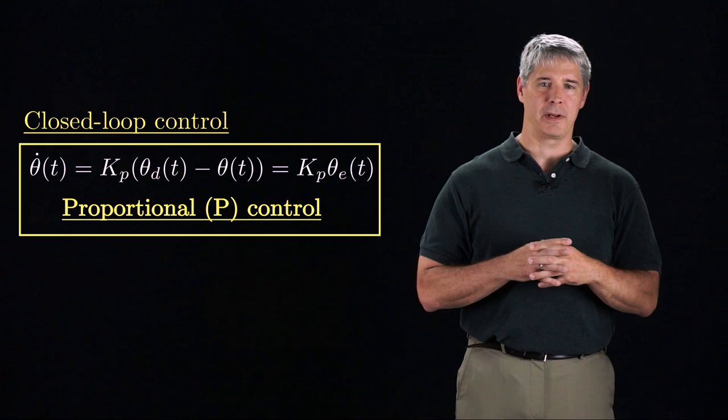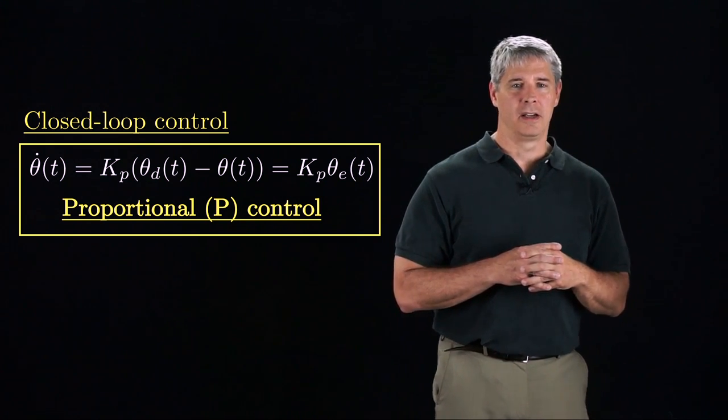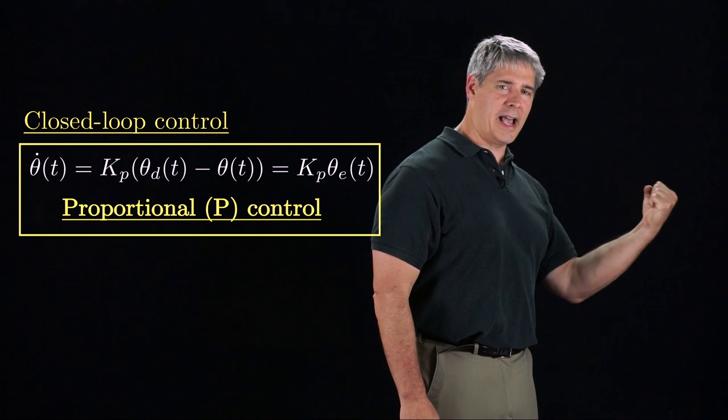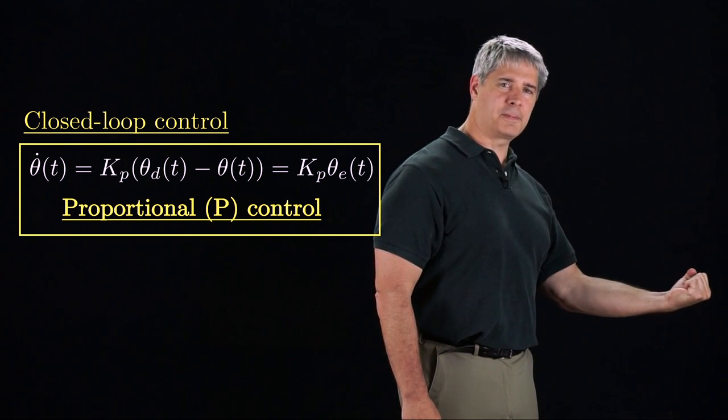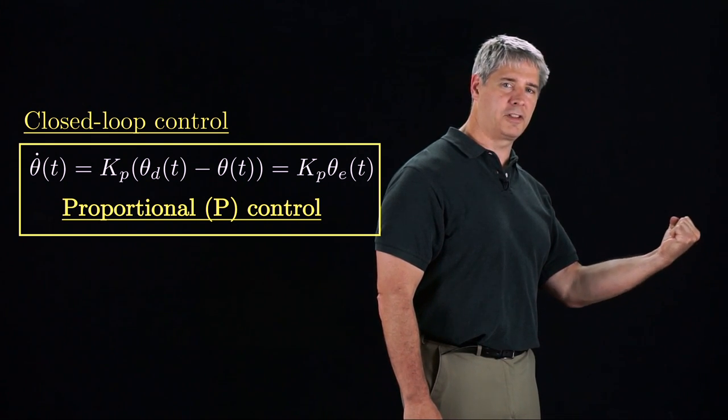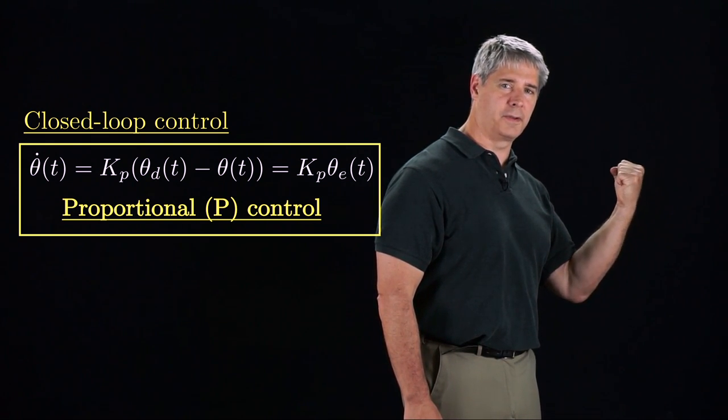The gain kp should be positive to ensure stability. For example, if the goal configuration is 1 radian and the actual configuration is 0, the error is positive, and a positive gain kp would command a positive velocity of the joint, pulling the joint to the goal configuration.